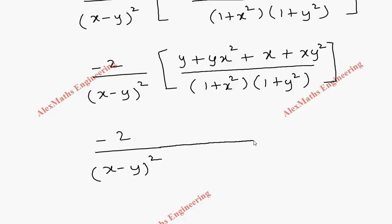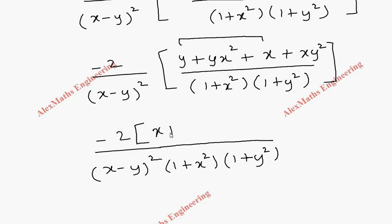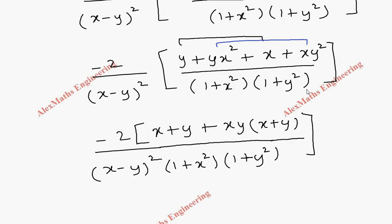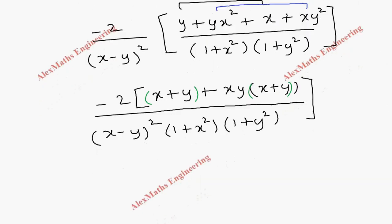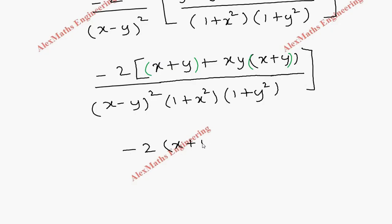Writing everything out: numerator has minus 2 and then bracket open, we write x plus y first. From the remaining terms, taking xy common leaves x and y, so we can factor out (x plus y) entirely since we have one (x plus y) and another xy(x plus y). Taking (x plus y) common gives minus 2(x plus y)(1 plus xy) as the numerator, all divided by the denominator (x minus y)²(1 plus x²)(1 plus y²).